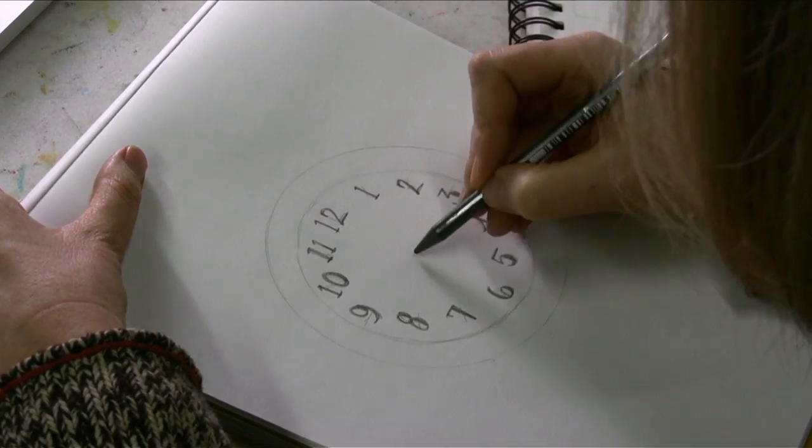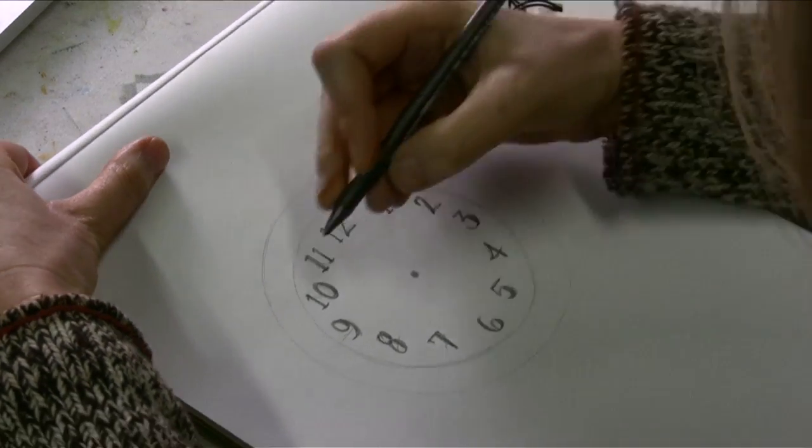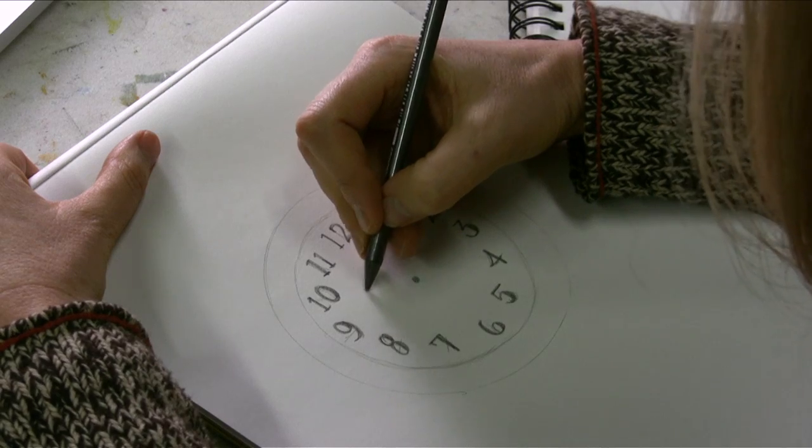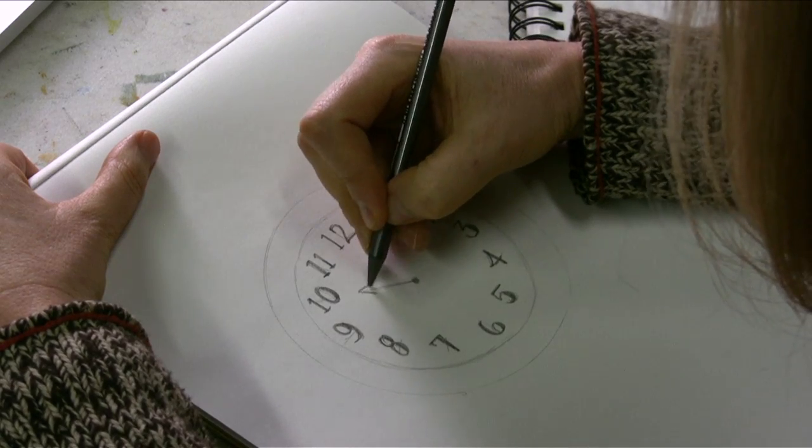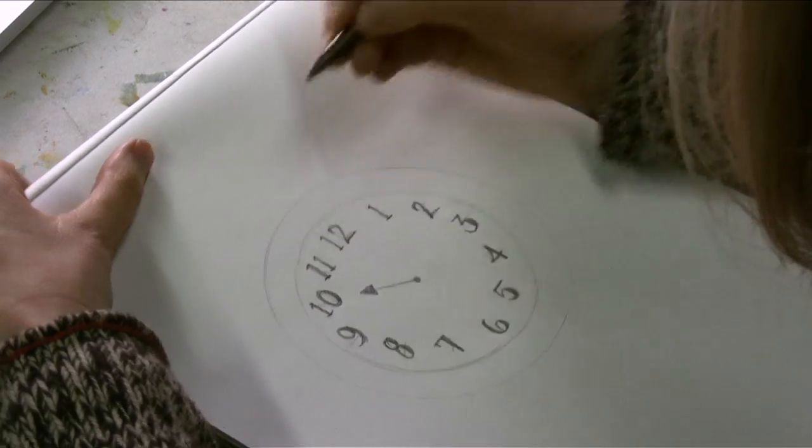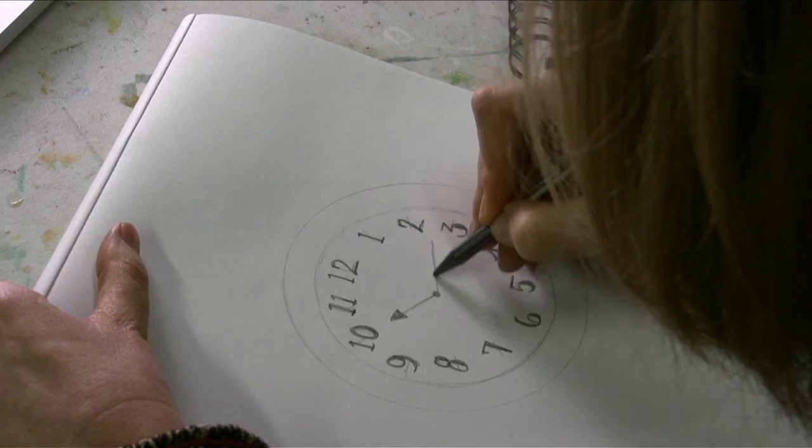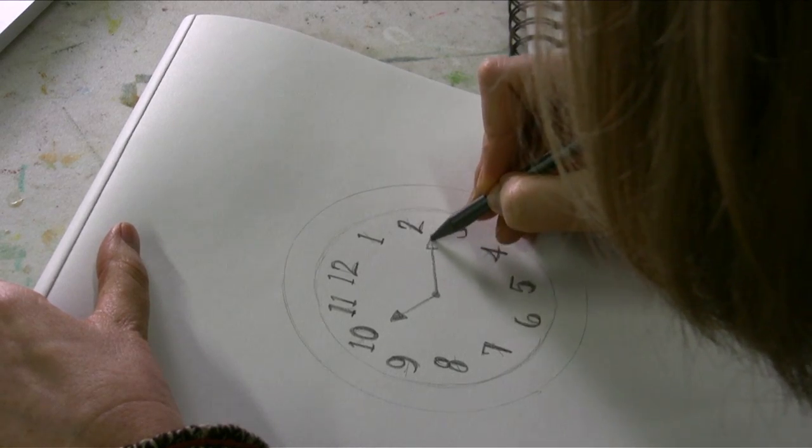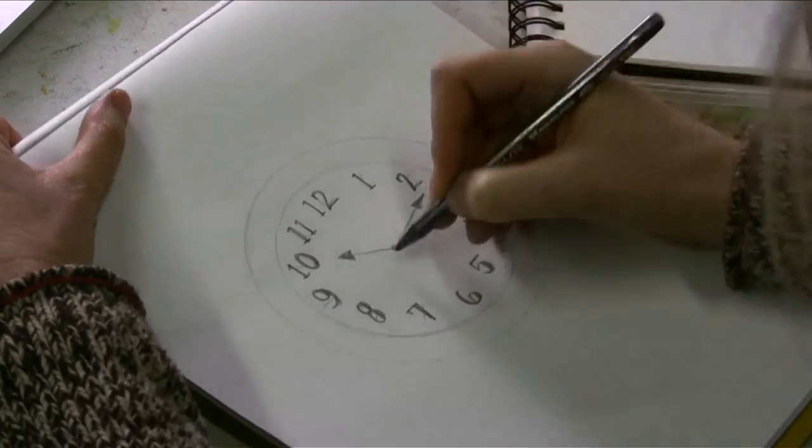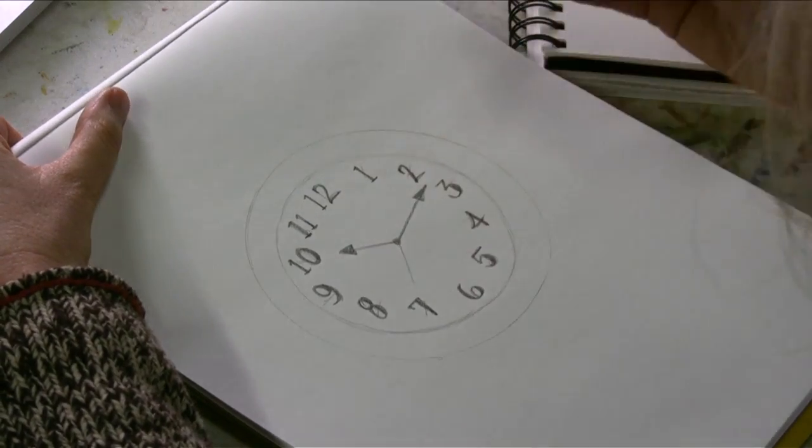Now, in the center, I'll draw my center and I'll draw my hands. Make sure your short hand and long hand are distinguishable so it's easy to tell what time it is. I'll draw a little second hand.